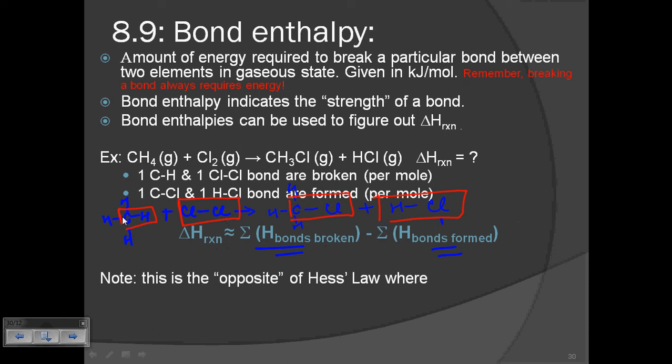One C-Cl bond is being formed and one HCl bond is being formed. So when you calculate delta H of reaction for this reaction, for bonds broken, you'll write one times bond enthalpy for a CH bond plus one times bond enthalpy for a Cl-Cl bond minus one times bond enthalpy for C-Cl bond plus one time bond enthalpy for HCl bond. And that's how you can calculate delta H of reaction.